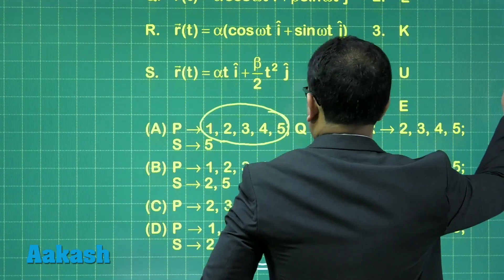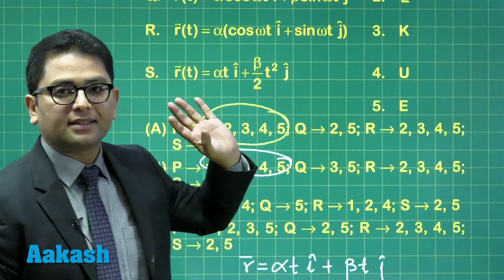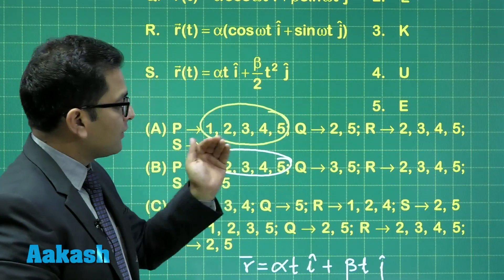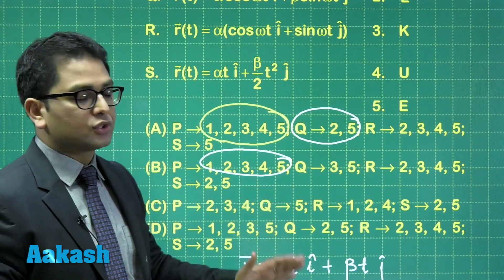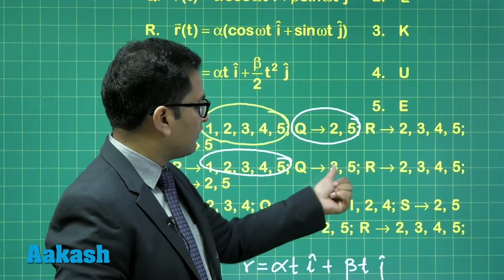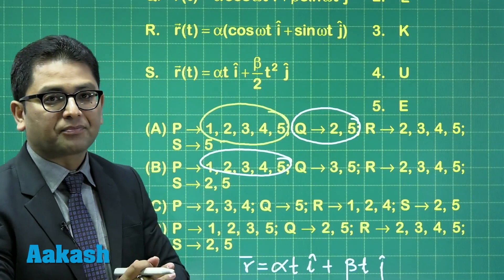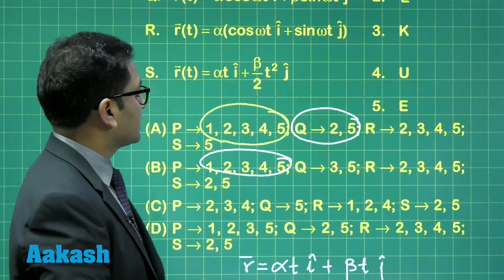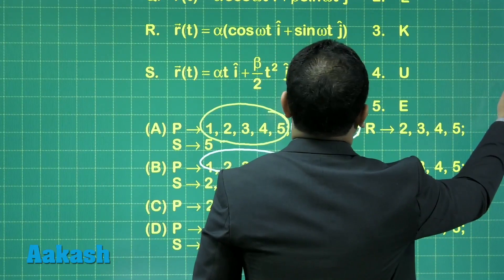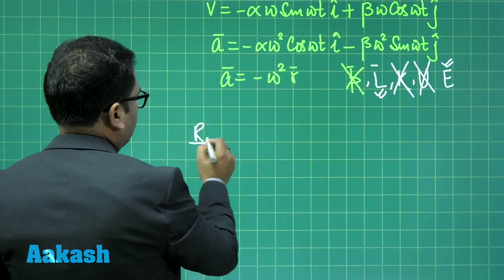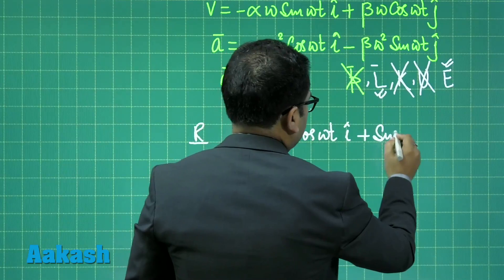For option R, the position vector is α cos(ωt) î + sin(ωt) ĵ. Note that the question is somewhat ill-designed, because by the second option you can already guess the answer. However, here we are going to verify everything. The velocity can be calculated as the derivative of this position vector.